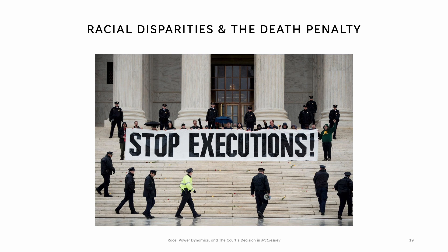Racial disparities in the death penalty: although the number of white Americans who face execution is higher in comparison to African Americans since 1977 in the United States, African Americans are disproportionately affected. Moran highlights the execution of 295 African-American defendants for killing a white victim compared to just 21 white defendants for killing an African-American victim. The Baldus study confirmed that in Georgia, black defendant/white victim cases advanced to capital punishment trials at roughly five times the amount of black defendant/black victim cases, and over three times the amount of white defendant/black victim cases.